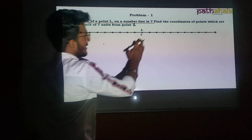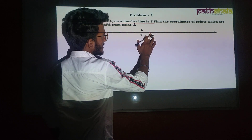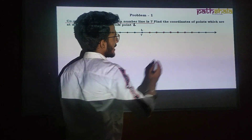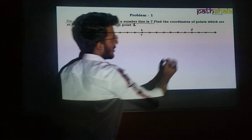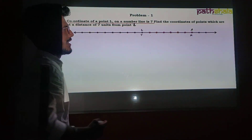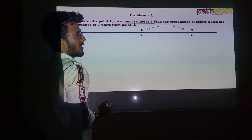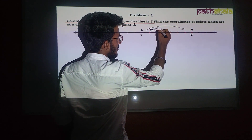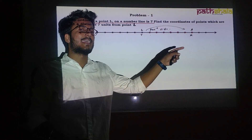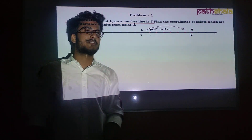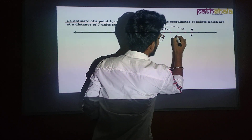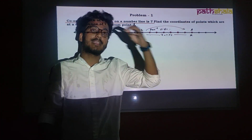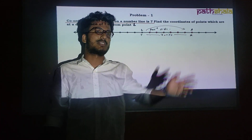Let point A be on the positive side of point L at a distance of 7 units. We assume the coordinate of A is x. Since A is to the right, x is greater than 7, so x is the greater coordinate.